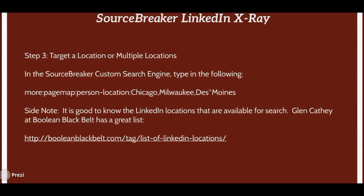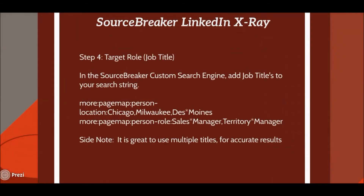For example, to target the tri-state area, you'd do: more:pagemap:person-location:Chicago,Milwaukee,Des*Moines. Notice there are still no spaces — it's Chicago comma Milwaukee comma Des*Moines. Since Des Moines is two words, instead of quotation marks like traditional Boolean, you simply add an asterisk in between. That will bring back profiles from all three areas. Any multi-word phrase between your commas should use an asterisk between the words.